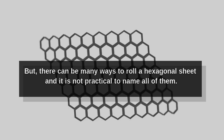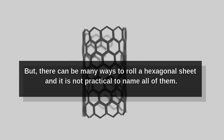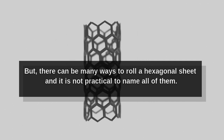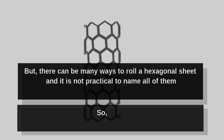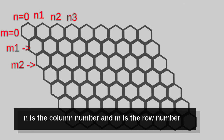There can be many ways to roll a hexagonal sheet and it is not practical to name all of them, so we give each of them a pair of indices n and m called the chiral vector. n is the column number and m is the row number.